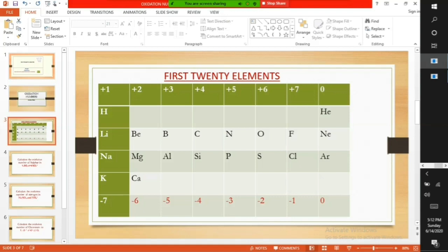The periodic table provides the valencies or charges of the element. Group 1 elements are plus 1. Group 2 plus 2. Group 3 plus 3. Group 4 elements are plus 4 or minus 4.